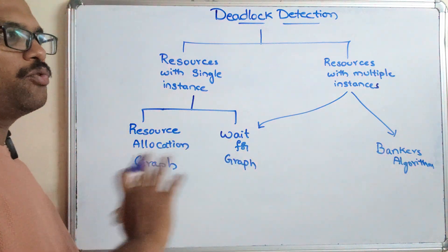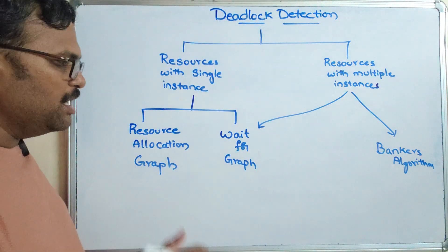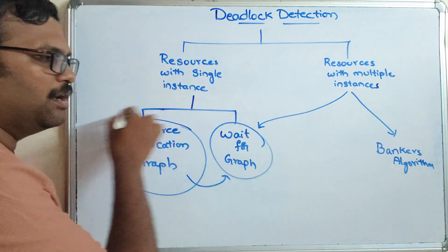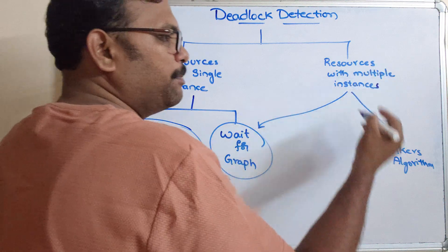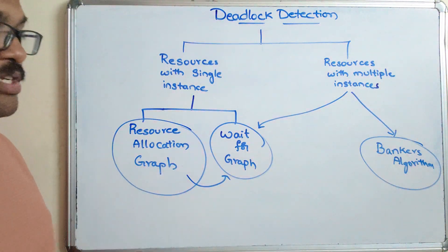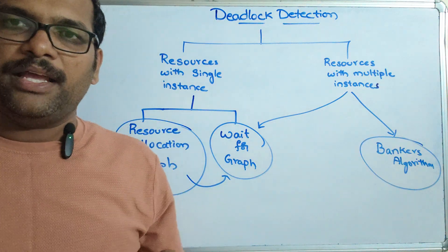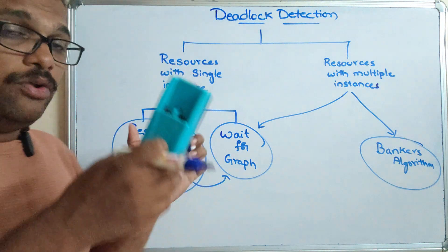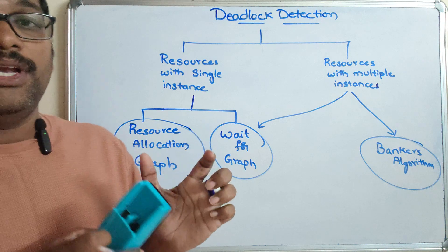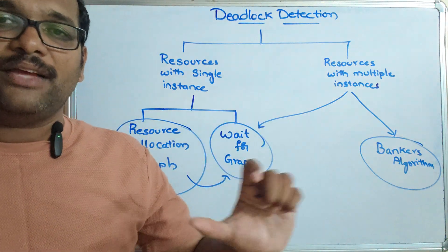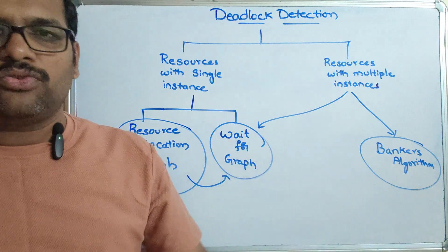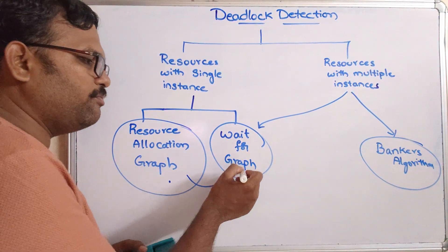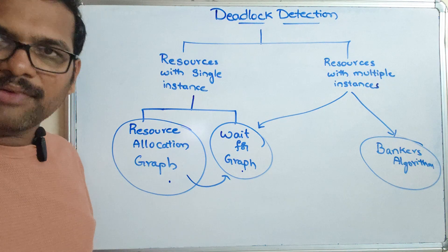These are the different approaches we'll use for deadlock detection. We'll go one by one: drawing the resource allocation graph, deriving the wait-for graph from it, and solving multiple-instance cases with the banker's algorithm. Deadlock detection is applied only after a deadlock occurs — we need to determine whether the state is safe or unsafe, where unsafe means it results in a deadlock situation.